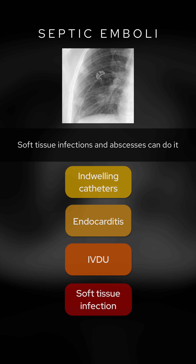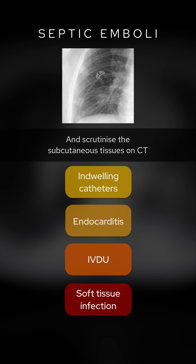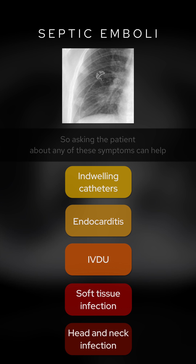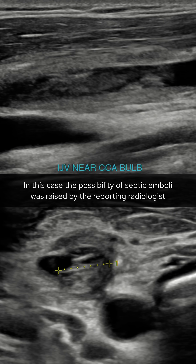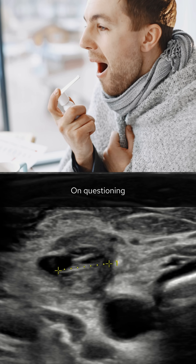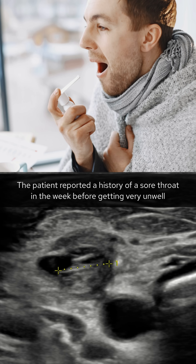Soft tissue infections and abscesses can also be a source, so clinically expose and examine the patient and scrutinize the subcutaneous tissues on CT. Head and neck infections, such as tonsillitis, are another possible cause, so asking the patient about any of these symptoms can help. In this case, the possibility of septic emboli was raised by the reporting radiologist, and the clinical team was asked to find a source. On questioning, the patient reported a history of a sore throat in the week before getting very unwell.